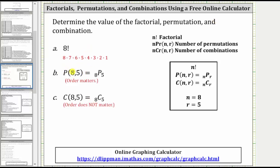We'll calculate the permutation of eight items selected five at a time, or eight permute five, as well as the combination of eight items chosen five at a time, or eight choose five.